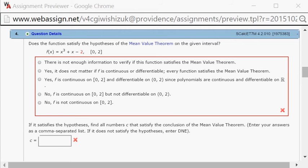Let's look at homework 4.2 problem number four. Does this function x cubed plus x minus 2 over the closed interval from 0 to 2 satisfy the hypotheses of the mean value theorem?